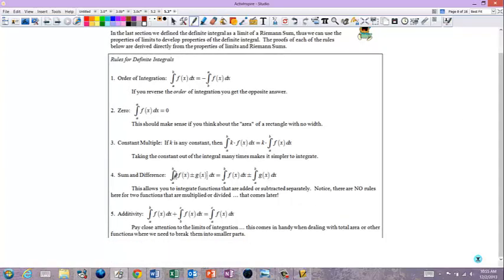Sum and difference. If you go from A to B of f(x) plus g(x), that's the same as A to B of f(x) plus A to B of g(x). This allows you to integrate functions that are added or subtracted separately. Notice there are no rules here for two functions that are multiplied or divided. That comes later, actually, in BC. And then additivity. If you go from A to B plus B to C, that's the same as from A to C. If you found the area from A to B and then the area from B to C, if you add them together, you would get from A to C.